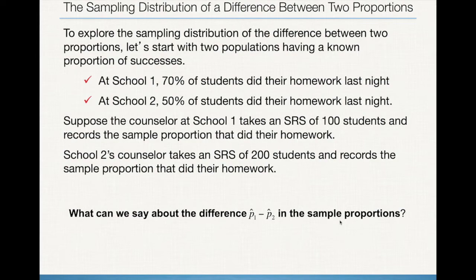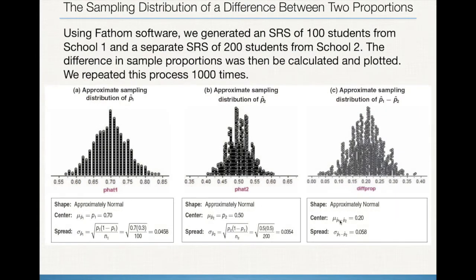If we take a look at the distributions for p̂1 and p̂2, remember these are the sampling distributions. We've simulated these particular scenarios and you can see those distributions are approximately normal, because this is all based on randomization and probability. You can see at the bottom we've calculated the center and standard deviation for each. If we look at the difference of these samples, we get something that's again approximately normal, but now with a mean and standard deviation related to the previous two distributions.